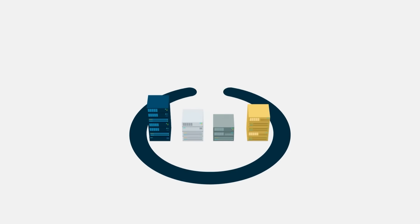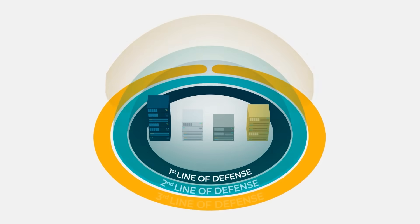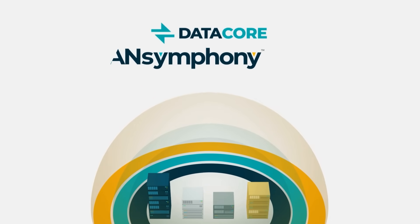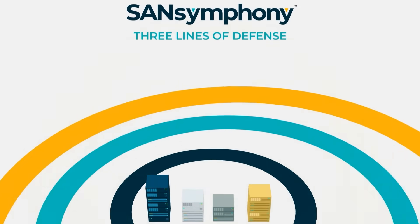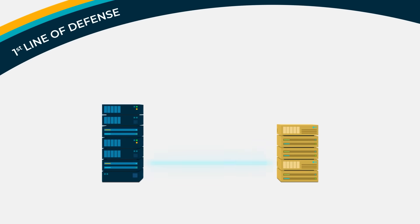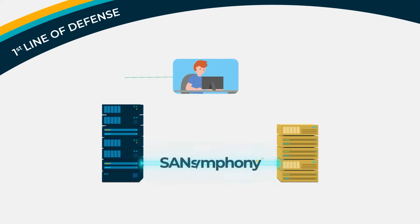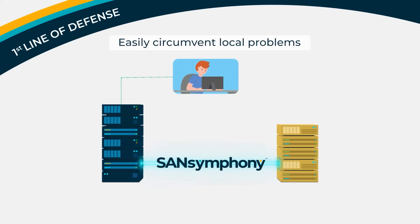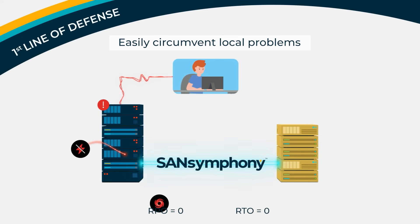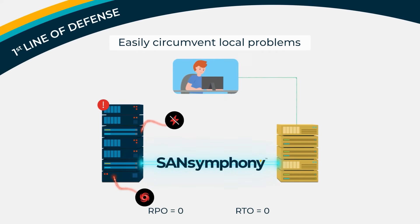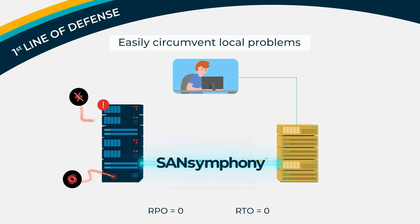Reinforce your business continuity and disaster recovery strategy with three lines of defense using DataCore SanSymphony. Having two synchronous copies of data in separate systems allows you to easily circumvent local problems. When one system is affected, automated failover will ensure data access from the redundant copy, and end users will not recognize there was a problem.